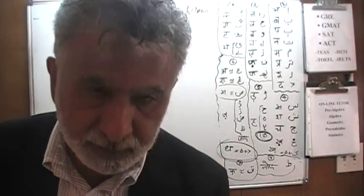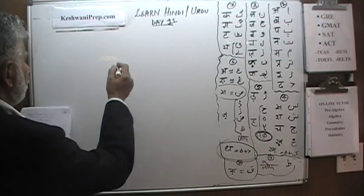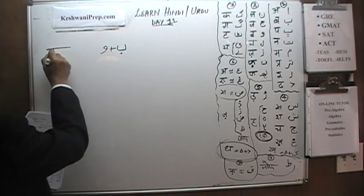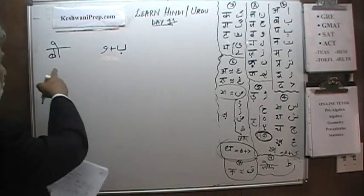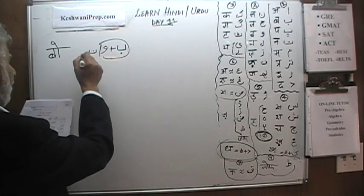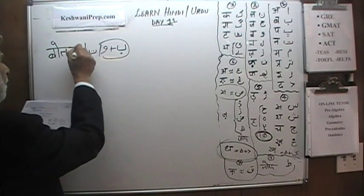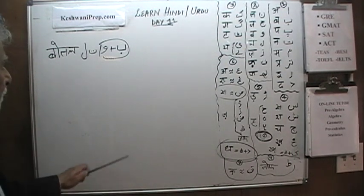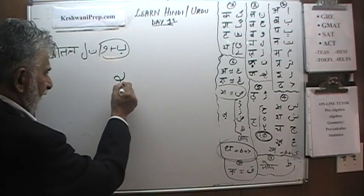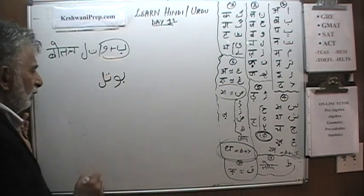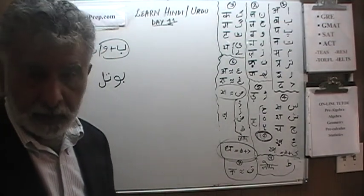We'll do Chhoti Oki Matra on the left-hand side and Badi Oki Matra on the right-hand side. Here's the first word. This is our Be — when we join Wow to it, it becomes Bo. So all of that is Bo. And then to that we add Ta and La. In Hindi it's very simple: you just keep writing letters next to each other. In Urdu, Be joins the Wow, and Te joins the La, giving us Botal. The O is very quick — Botal.